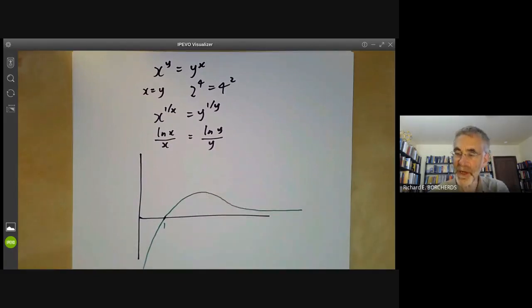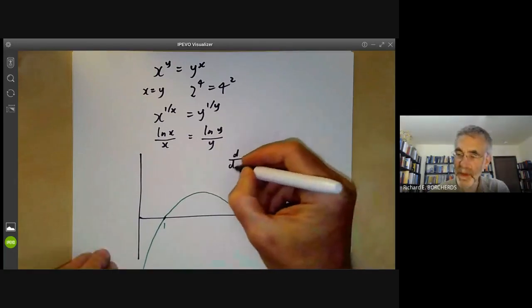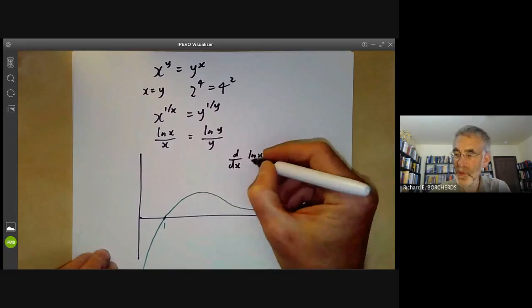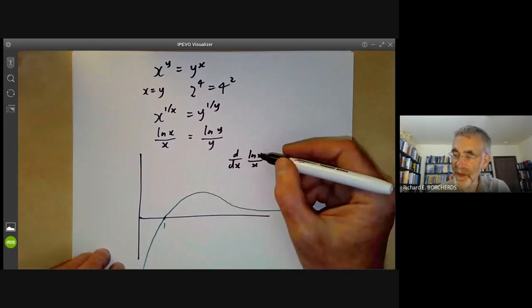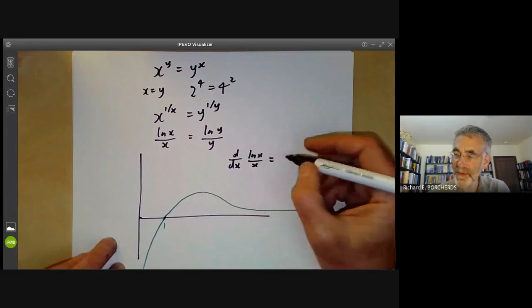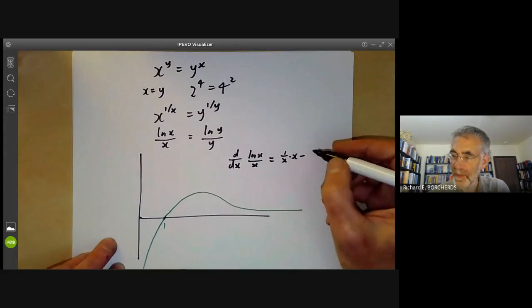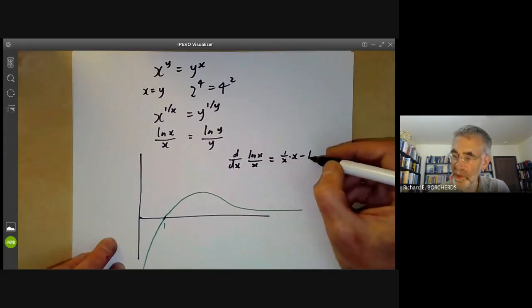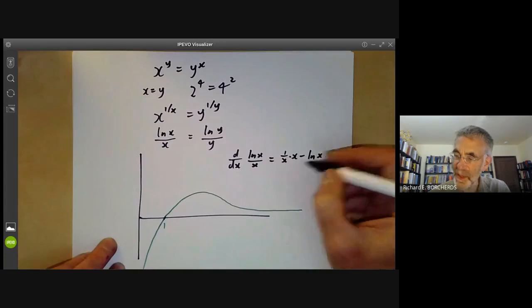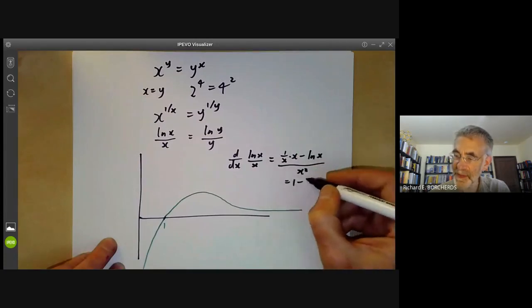And obviously we should find out what the maxima of this function are. So we differentiate log of x over x. And using the usual rule for derivative of a quotient, we find this is equal to one over x times x minus log of x times one, all divided by x squared, which is equal to one minus log of x over x squared.